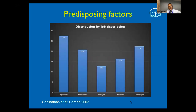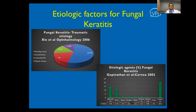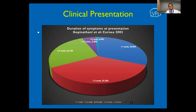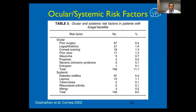When we look at predisposing factors, trauma with vegetative matter or people employed in agriculture or manual labor are more predisposed to fungal keratitis. Systemic conditions also predispose patients, including uncontrolled blood sugars or diabetes, and unsolicited corticosteroid topical usage. Prior surgery and lagophthalmos were common ocular risk factors, and diabetes was the leading systemic risk factor for fungal keratitis.